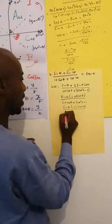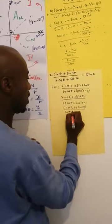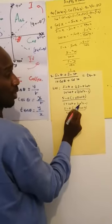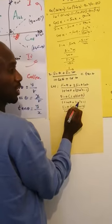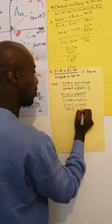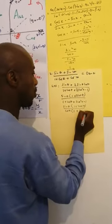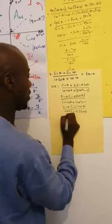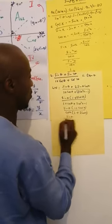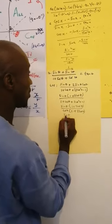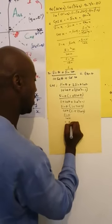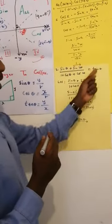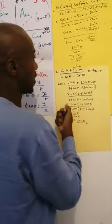We take the common factor from the denominator, which is cos θ, leaving cos θ(1 + 2cos θ). So the expression becomes sin θ(1 + 2cos θ) divided by cos θ(1 + 2cos θ). This gives sin θ over cos θ, which is tan θ. We've proved that this side is equal to that side.